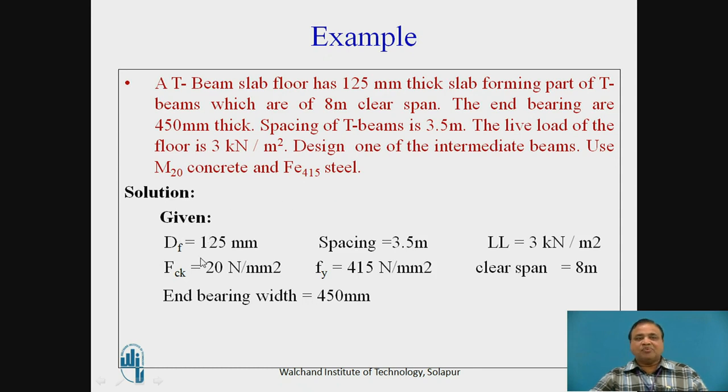So the given things in the above example are: depth of flange is 125 mm, spacing of T-beam is 3.5 meter, live load is 3 kN per meter square, Fck is 20 N per mm², Fy is 415 N per mm², clear span is 8 meter, and end bearing width is 450 mm.